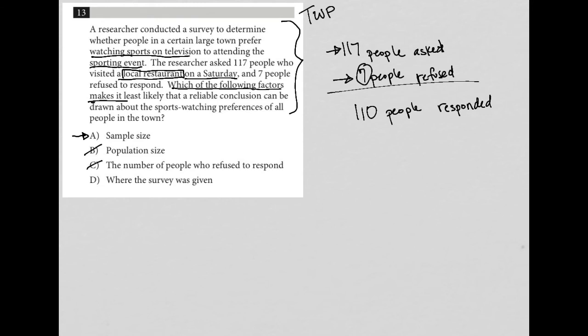And then lastly, where the survey was given. Well, where was this survey given? The survey was given at a local restaurant. All right. So it seems like this question's answer is between A and D as my 50-50 here. So I'm using some of my skills from the reading and the writing section on the math section here.